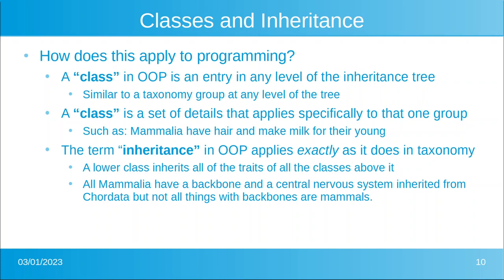More precisely, a class only contains the details specific to that group and everything below it. The term inheritance in object-oriented programming applies exactly like in biology: all mammals have a backbone and central nervous system inherited from Chordata, but not all things with backbones are mammals. Let's think about how a class applies to a particular individual of that class.